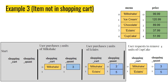The third scenario: the user has chosen milkshake and eclairs — three and five respectively — but then says they want to remove four units of cupcake. This is strange because the user hasn't even purchased cupcake. So we are going to ignore this request, and the shopping cart remains completely untouched.